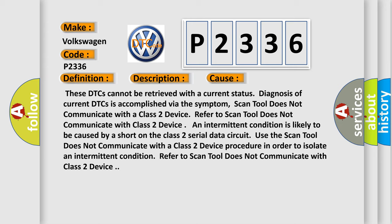Refer to scan tool does not communicate with class 2 device. As an intermittent condition is likely to be caused by a short on the class 2 serial data circuit. Use the scan tool does not communicate with a class 2 device procedure in order to isolate an intermittent condition. Refer to scan tool does not communicate with class 2 device.